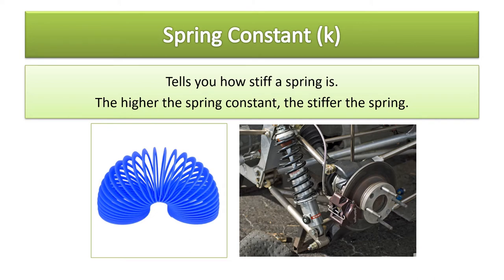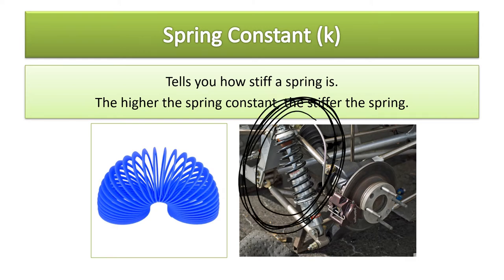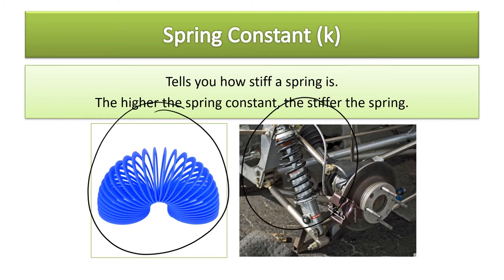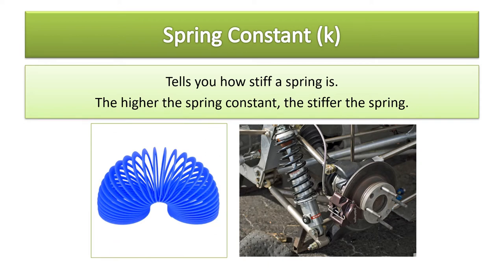The spring constant k tells you how stiff a spring is — the higher k is, the stiffer the spring. For example, comparing a slinky to a car shock absorber spring: which has the higher spring constant? The car shock has a higher spring constant because it is much stiffer. Not all springs are created equally — the same force applied to different springs will cause different amounts of stretch or compression.